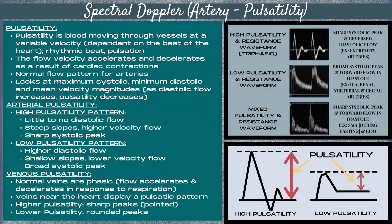Pulsatility is blood moving through the vessels at a variable velocity, which is dependent on the beat of the heart — a rhythmic beat, a pulsation. The flow velocity accelerates and decelerates as a result of cardiac contractions, and this is a normal flow pattern for arteries. Pulsatility looks at the maximum systolic, minimum diastolic, and mean velocity magnitudes. As diastolic flow increases, pulsatility decreases.